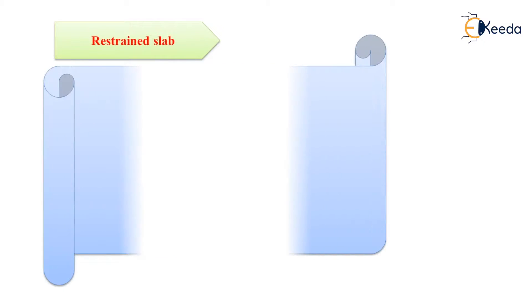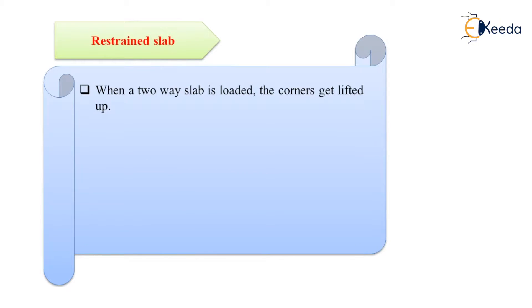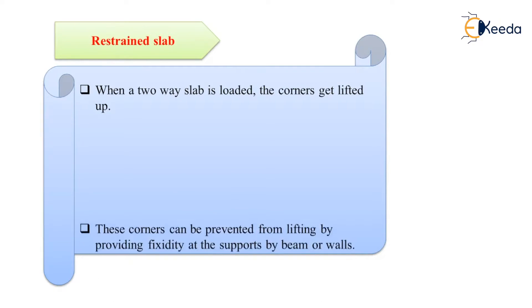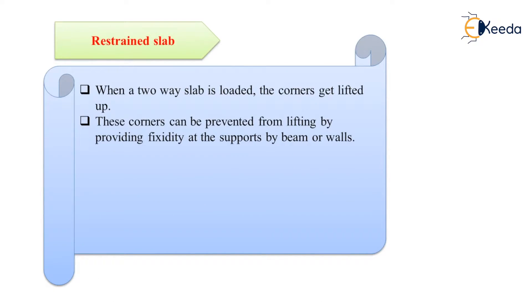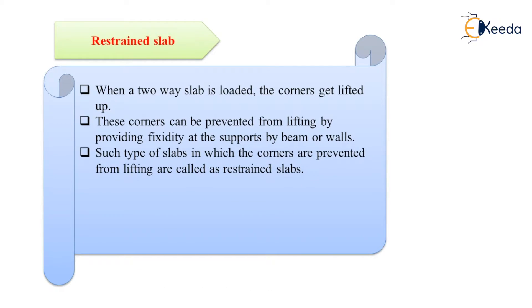Number one — restrained slab. When a two-way slab is loaded, the corners get lifted up. These corners can be prevented from lifting by providing fixability at the support in terms of beams or walls. Such types of slab in which corners are prevented from lifting are called restrained slabs.